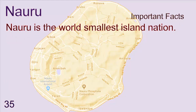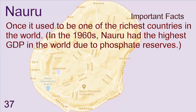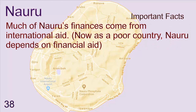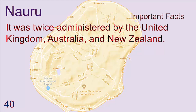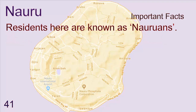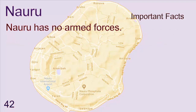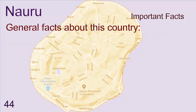Some important facts about Nauru: Nauru is the world's smallest island nation. It has been inhabited for more than 3,000 years. Once it used to be one of the richest countries in the world. Much of Nauru's finances come from international aid. Nauru is the least populated member of the UN. It was twice administered by the United Kingdom, Australia and New Zealand. Residents are known as Nauruans. Nauru has no armed forces.